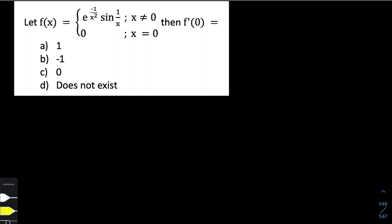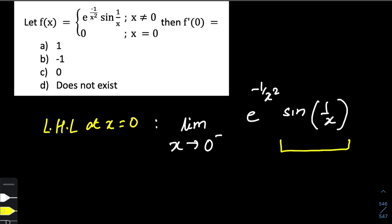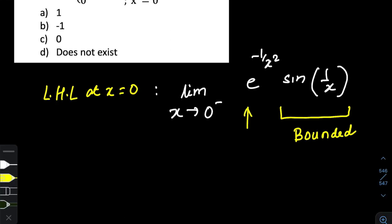So what is the left-hand limit of this function as x tends to zero? For that we use: limit as x tends to zero minus of e to the power negative one by x squared, times sine of one by x. Note that sine of one by x is a bounded function — its value is restricted between minus one and one. And e to the power minus one by x squared, as x tends to zero minus, becomes e to the power minus infinity, which tends to zero. So the product of something tending to zero times a bounded value is zero — the left-hand limit is zero.